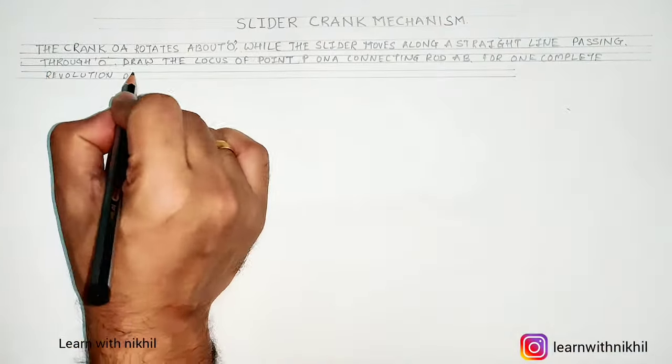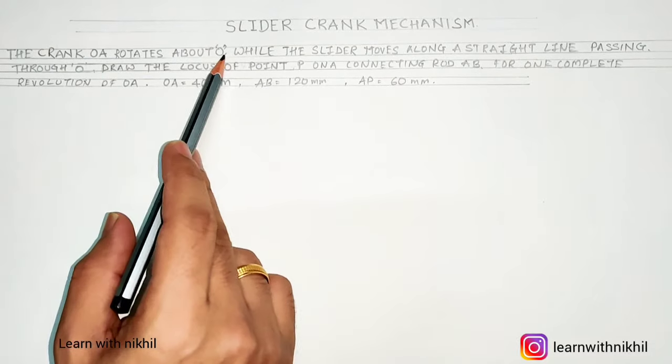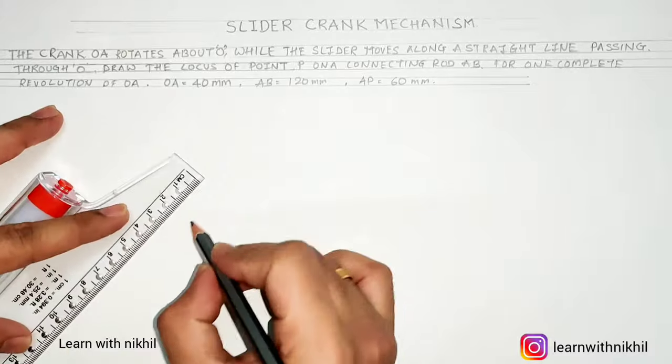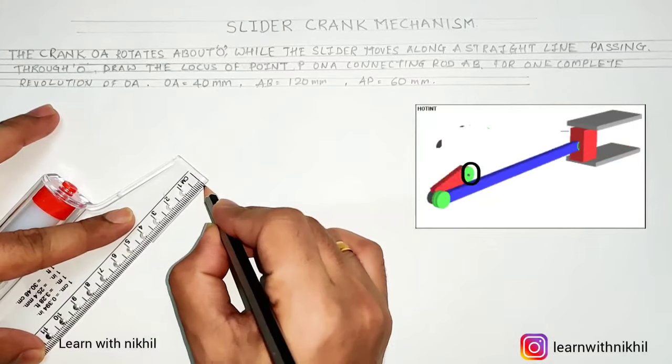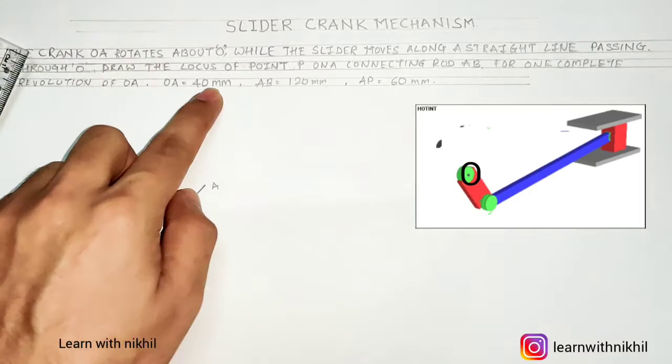The crank rotates about O. The crank is nothing but a rod, so O is a fixed part. In the GIF you can see O is the fixed part and A is a moving part.